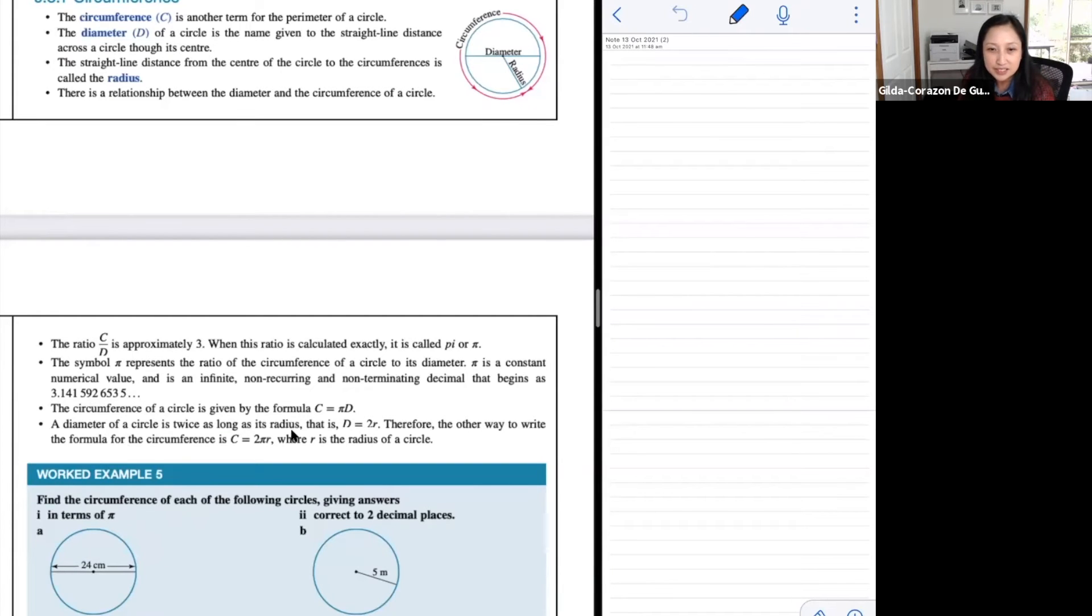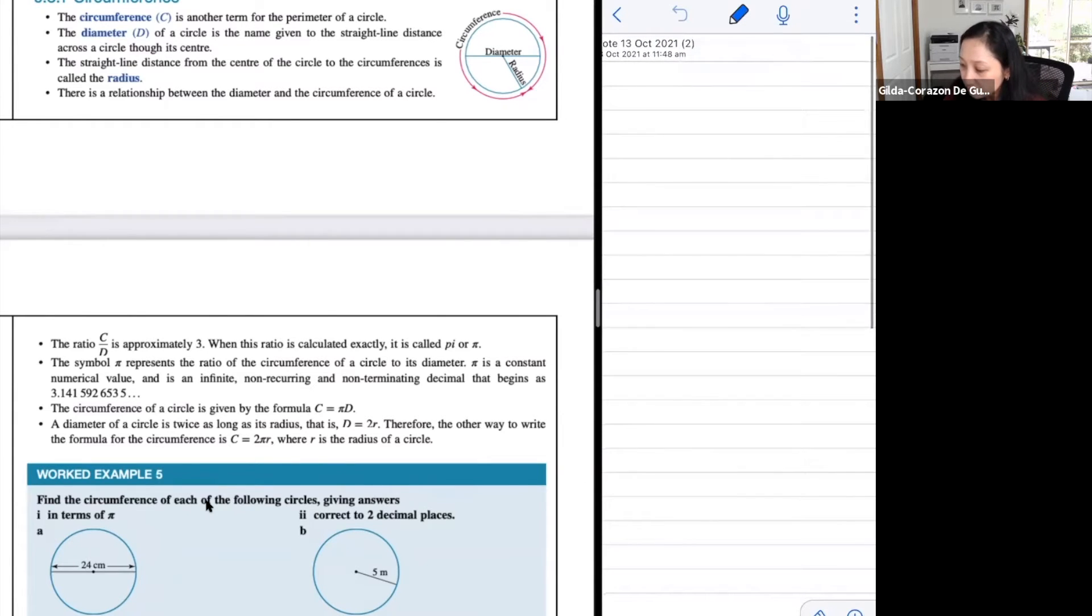So diameter of a circle is twice as long as its radius. That is d = 2r. Therefore, the other way to write the formula for the circumference is 2πr. So we've got two working formulas here, depending on what you're given. For us to figure out the circumference of a circle, we can use π times the diameter. Or if you're given the radius, then it would be 2 times π times the radius. Because we know that 2 times the radius would give you the diameter.